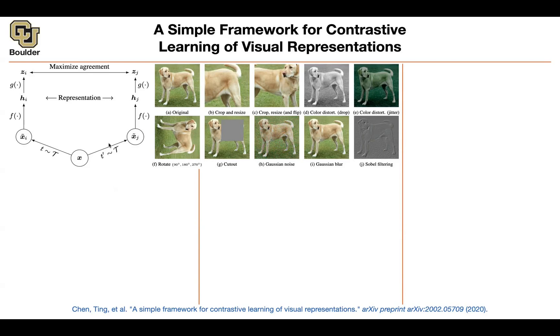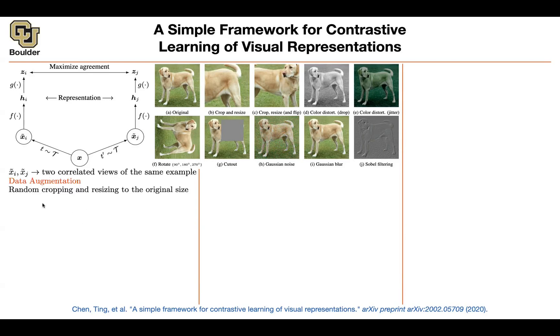So you have two different versions of the same image — these are correlated views. The types of data augmentations you're going to do are random cropping, resizing, color distortion, and Gaussian blur.